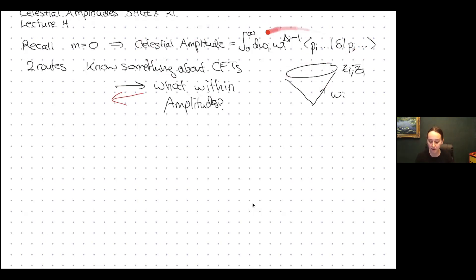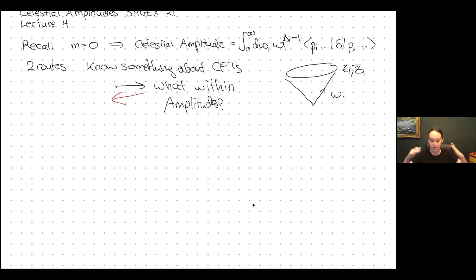We saw there was a way to write soft theorems as currents, which motivated us to look for an object we could say was a correlator of a CFT. The S-matrix is already somewhat holographic — amplitude people try to learn about bulk physics from how the scattering amplitude behaves. Now we're making it more of a position-space version of holography, closer to the types of dictionaries you have in AdS/CFT.